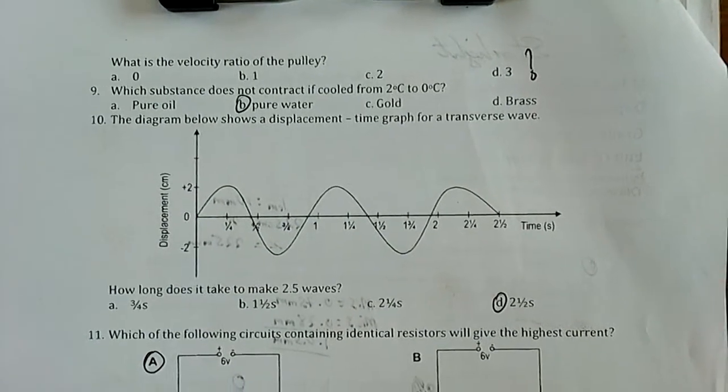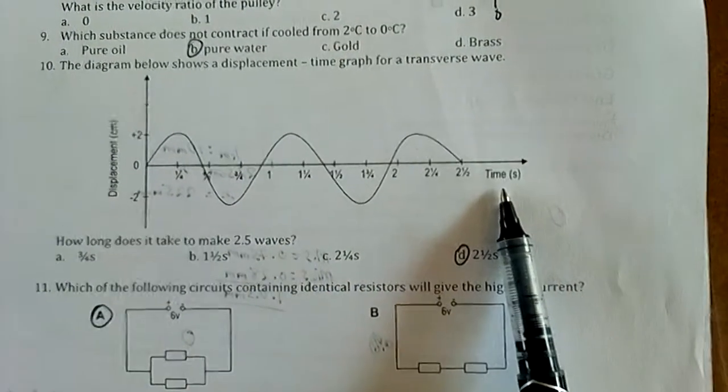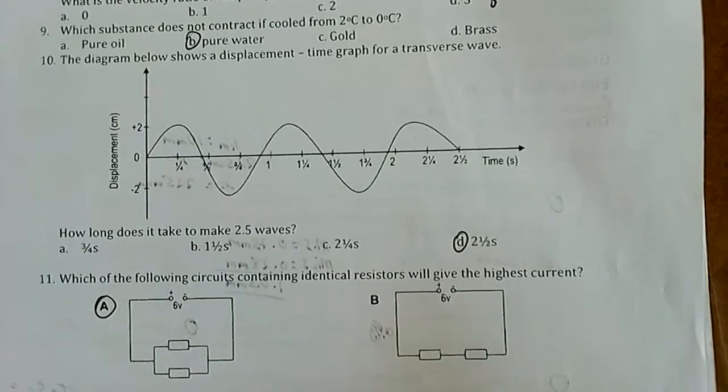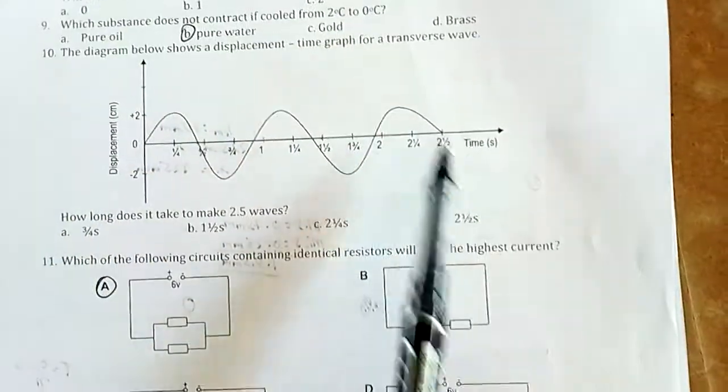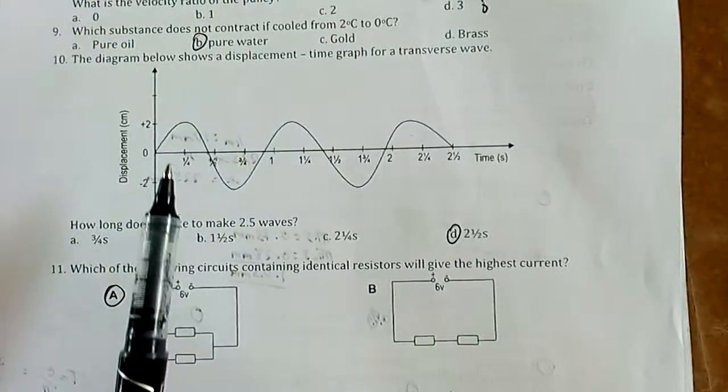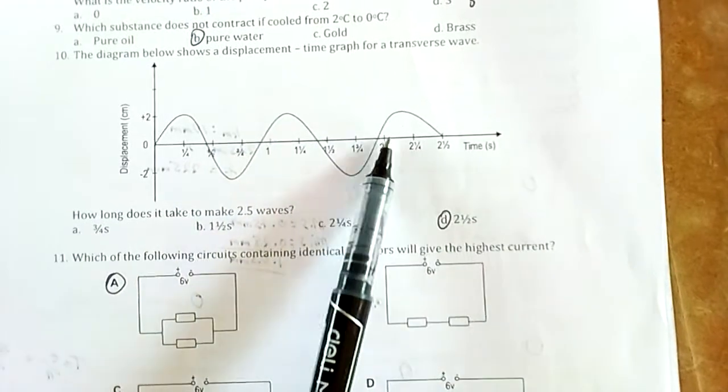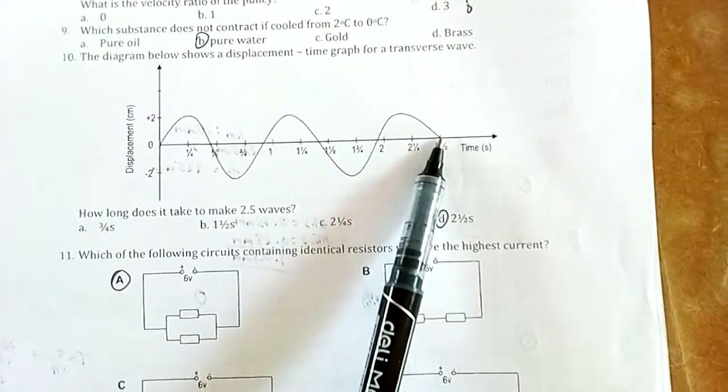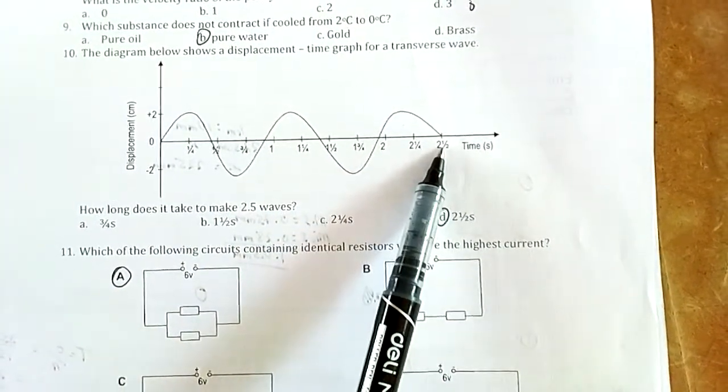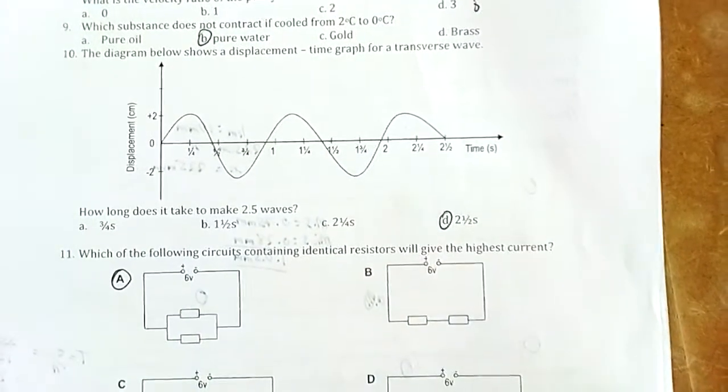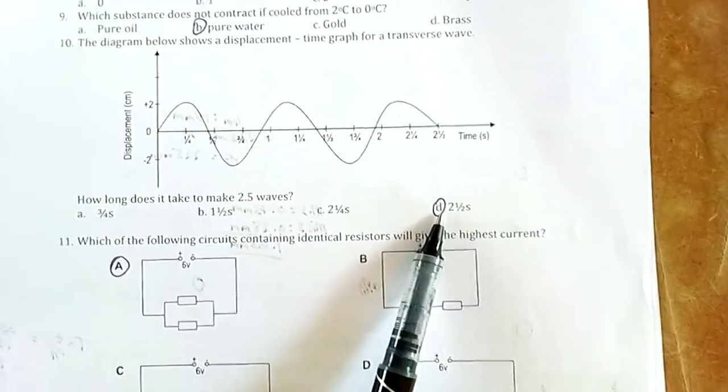Number 10: The diagram below shows a displacement-time graph for a transverse wave. How long does it take to make 2.5 waves? You can tell there are 2.5 waves passing. One crest and one trough is one cycle or wave. Another crest and trough is one wave, making two waves. Then a crest without a trough gives half a wave. The ending point is on the 2.5 second mark in time. Therefore, it takes 2.5 seconds to produce 2.5 cycles. Our answer is D.